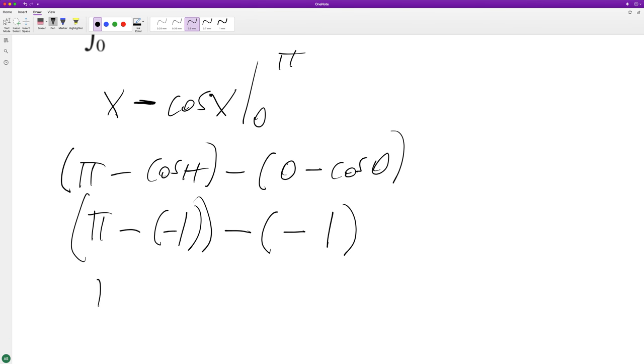It's a lot of canceling here, so we get pi plus one on the outside here, and this becomes minus negative one, so plus one. So we end up with pi plus two, and that's it.